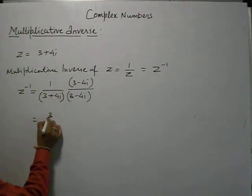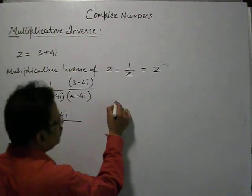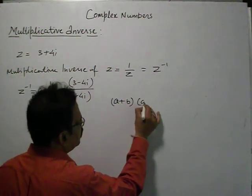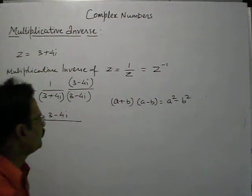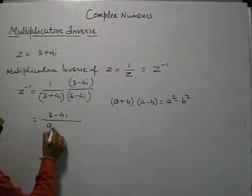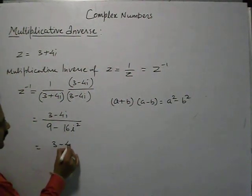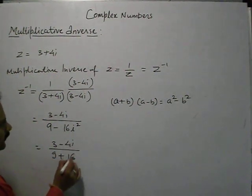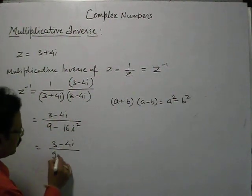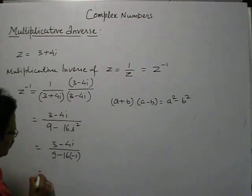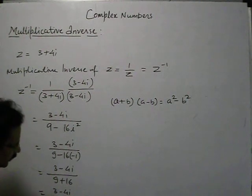We multiply the numerator and denominator by 3 minus 4i. Now we will get 3 minus 4i upon (a plus b)(a minus b), which equals a squared minus b squared — that is the algebraic identity. So we will get 3 squared which is 9, minus 4i squared. Now 4 squared is 16 and i squared is minus 1. So we get 3 minus 4i over 9 plus 16, because the minus and i squared equals minus 1 makes it positive.